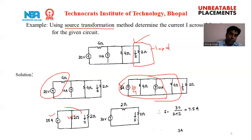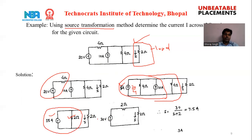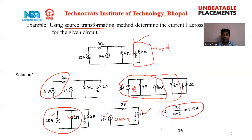The 15 ampere current source and 2 ohm resistance are converted into a voltage source: V equals I times R equals 15 times 2 equals 30 volt. With 2 ohm connected in series, the overall current across the 2 ohm load is I equals 30 divided by (2 plus 2), which equals 7.5 ampere.